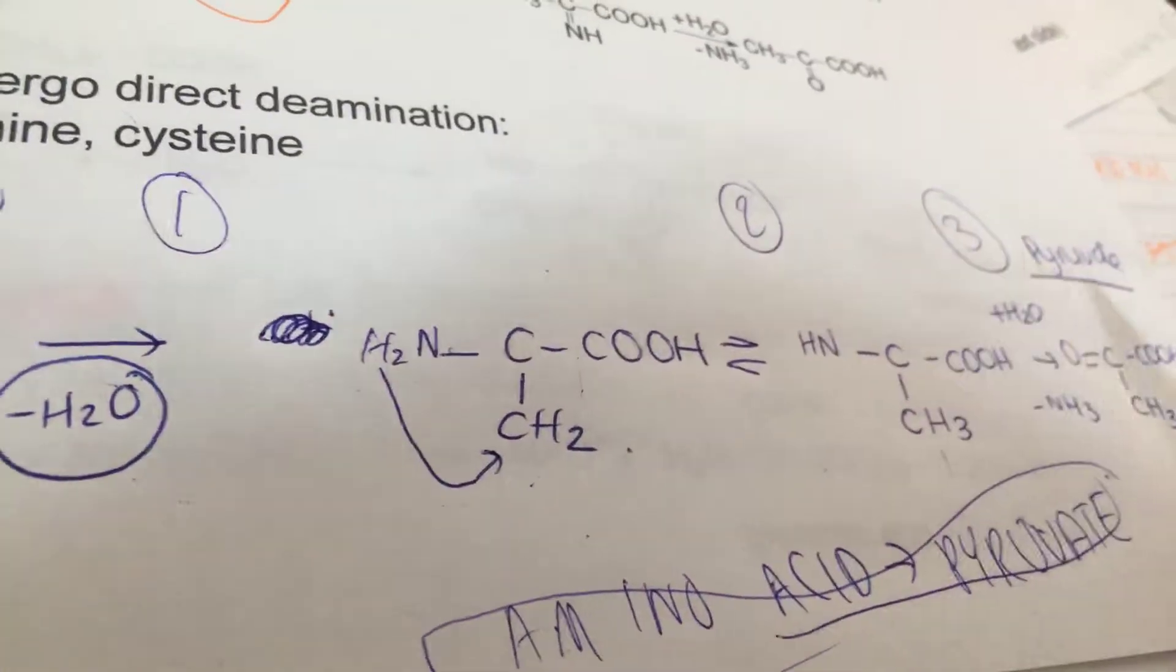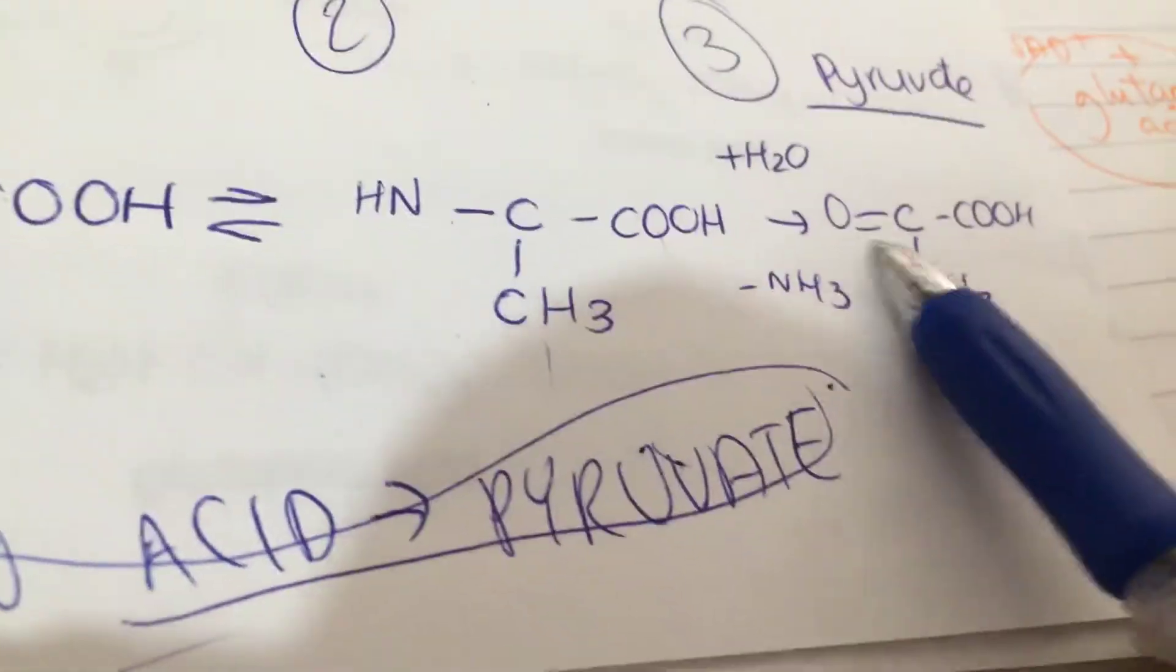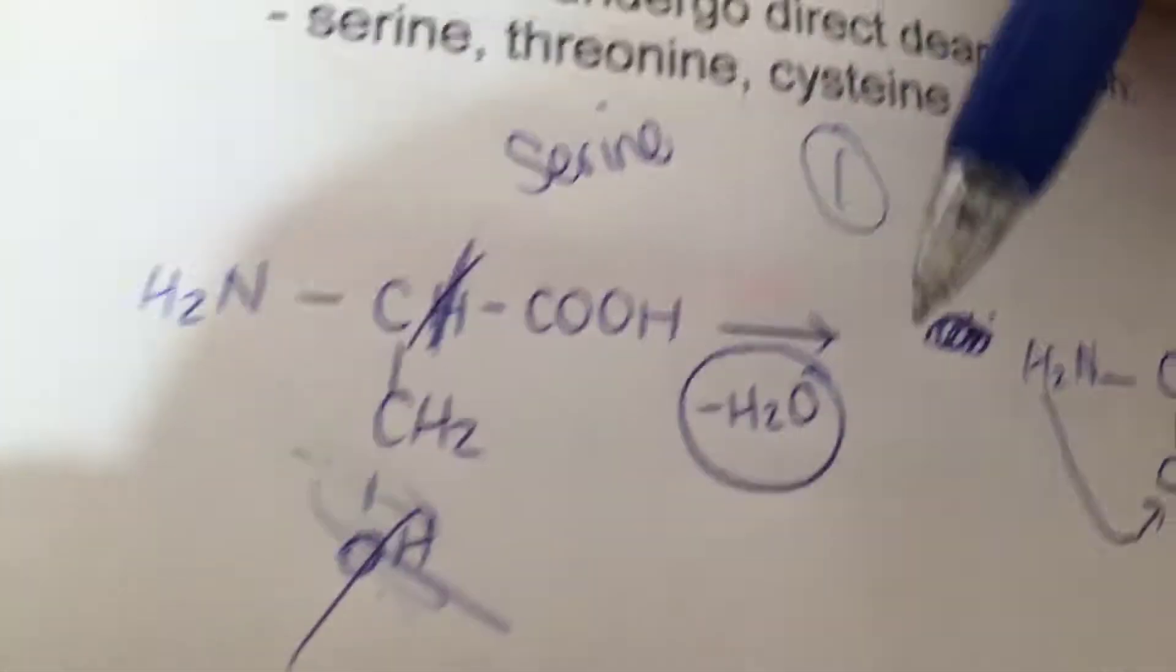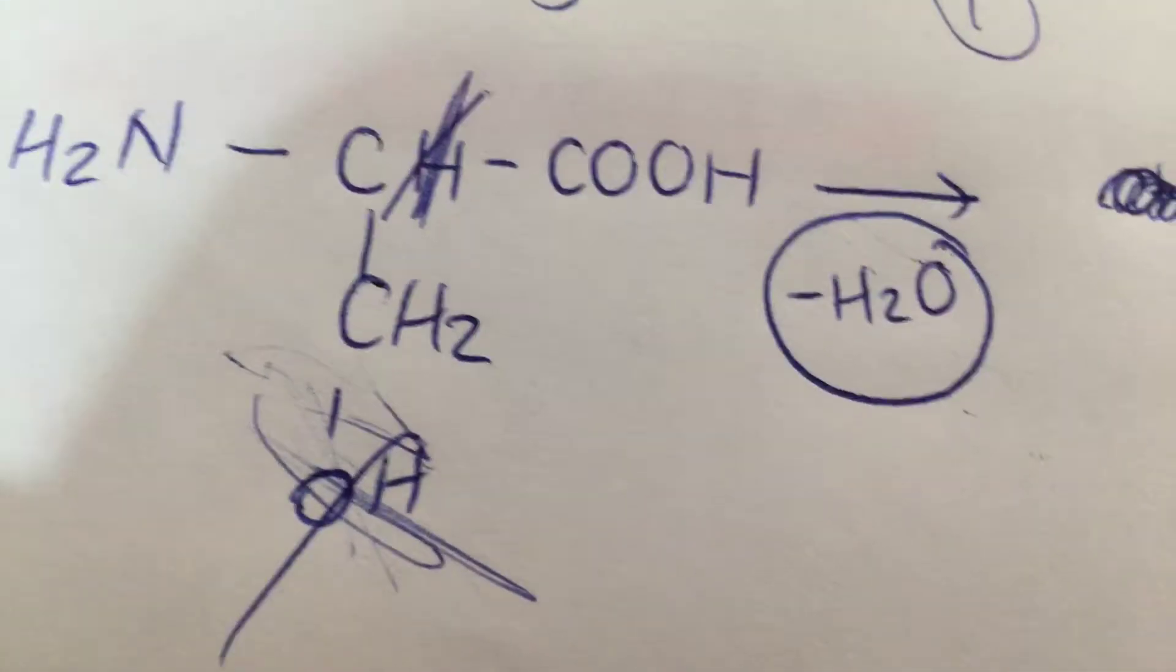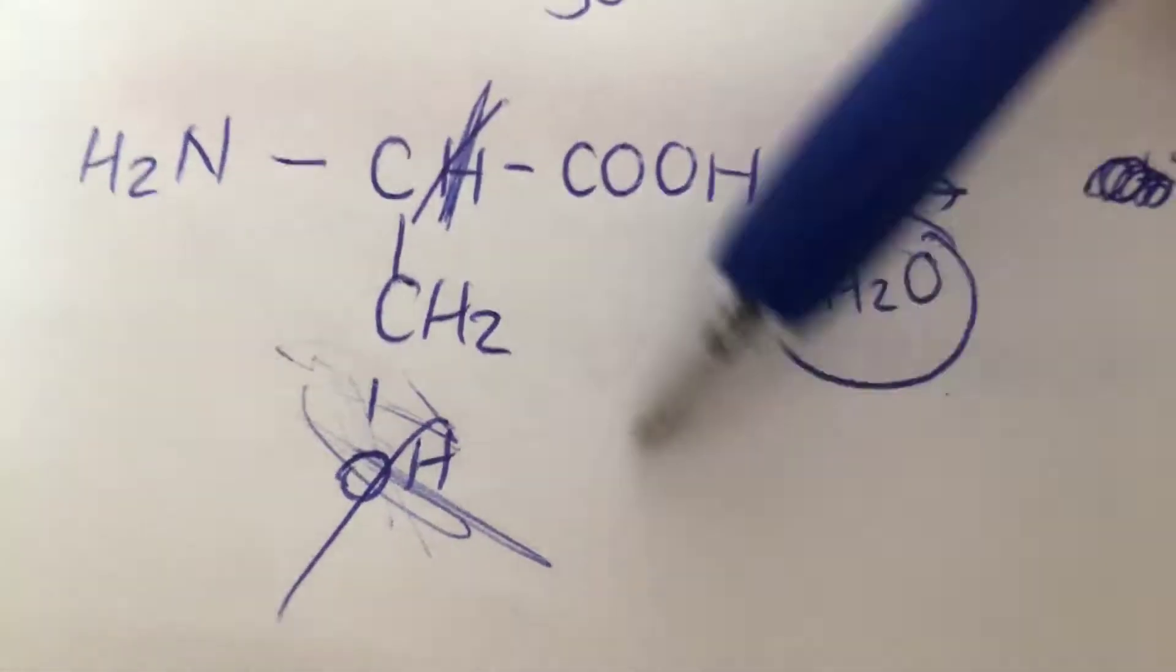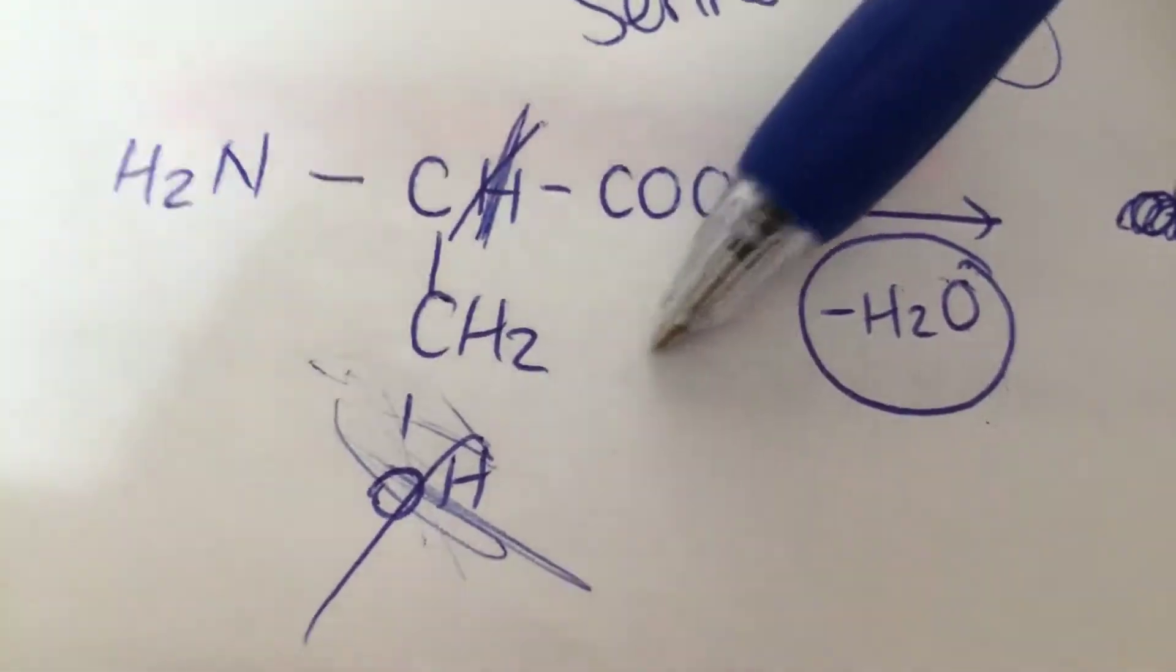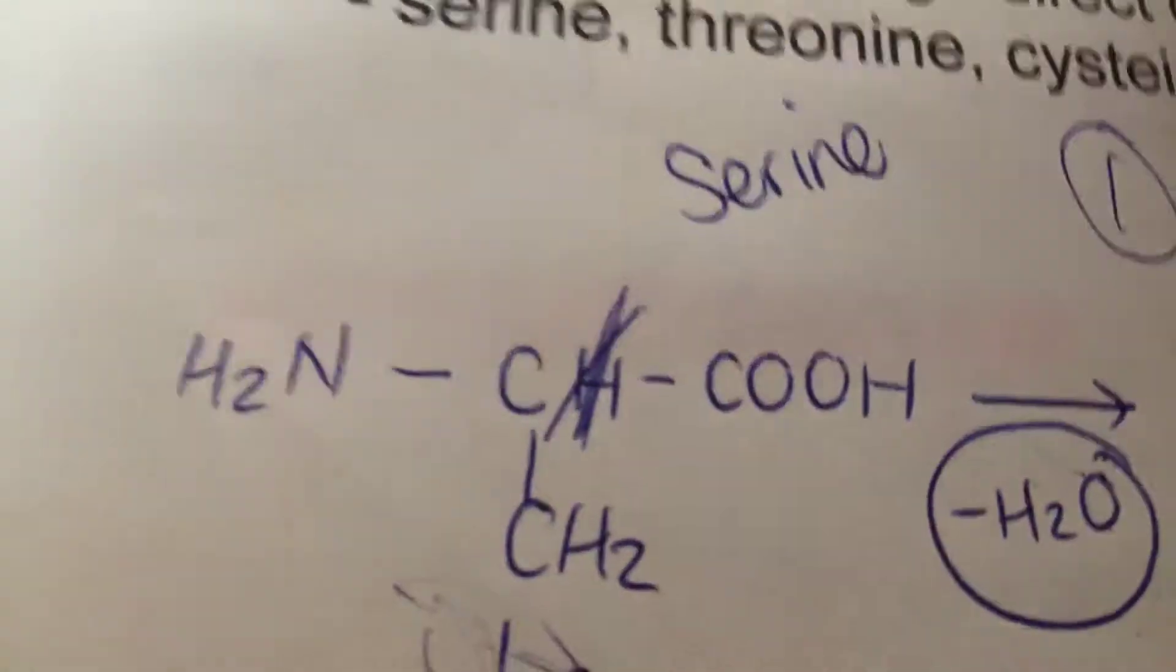Here you've got your amino acid - this is serine. You've got your COOH group, H2N and H2, and here you've got your R group which is CH2 and OH. You're taking away H2O - you're going to take one H from the main chain and OH from the R group.